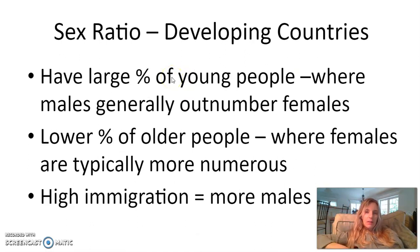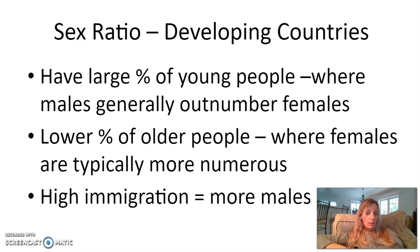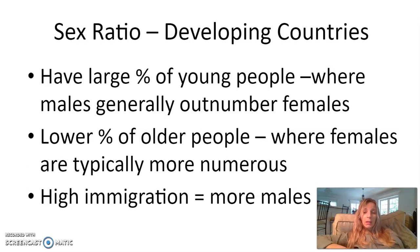In developing and less developed countries, a large percentage of the population is young people, where males generally outnumber females, and a lower percentage are older people, where females are typically more numerous. The rest of the world has about 102 men to every 100 women. Additionally, high out-migration of young men — moving to more developed countries for higher-paying jobs — does lower their male population.